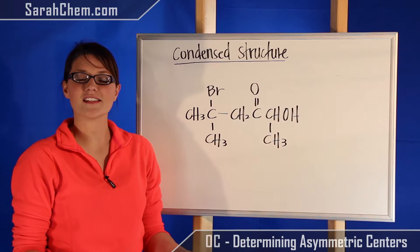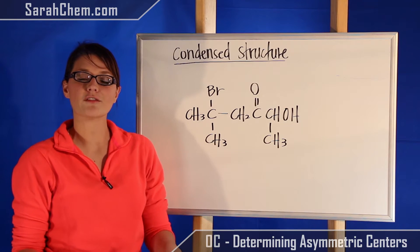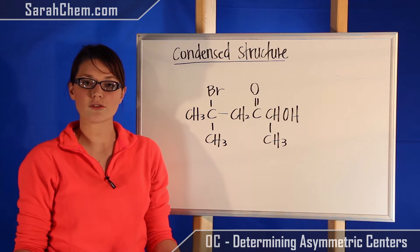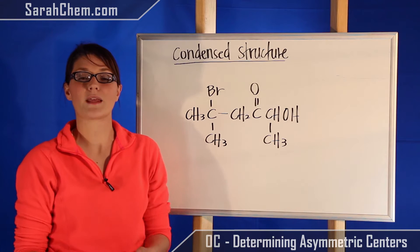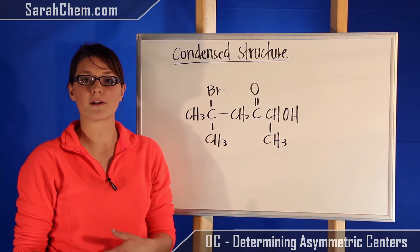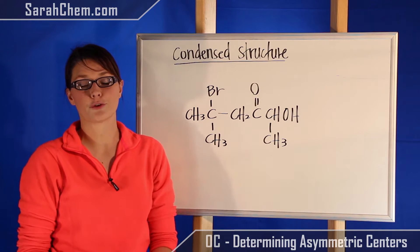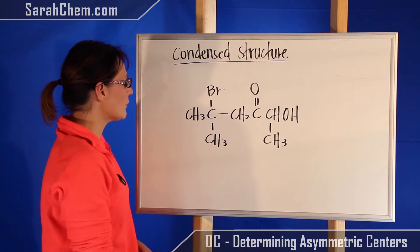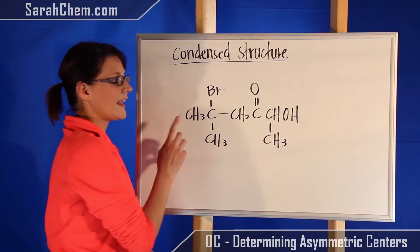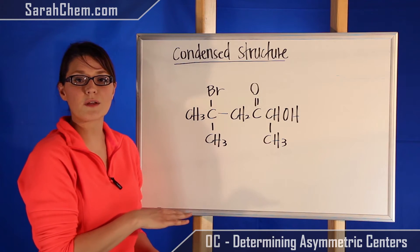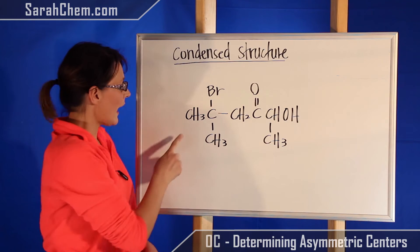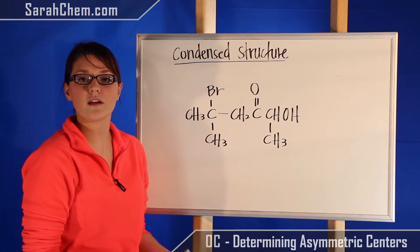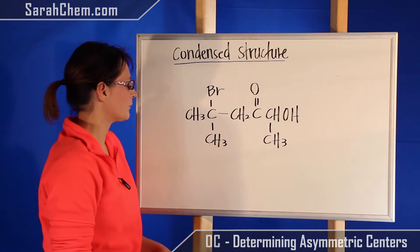Let's take a look at a condensed structure and see if we can find the asymmetric centers in it. Remember our asymmetric centers are going to be sp3 hybridized and they're going to have four different groups attached. So over here if we move along we see first this carbon — it is sp3 hybridized, however it has three of the same groups (hydrogen) present on it, so it can't be an asymmetric center.